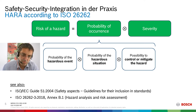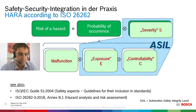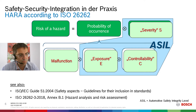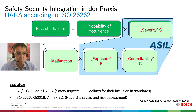The ISO 26262 maps these parameters to different parameters. The risk of a hazard is the combination of the probability of the malfunction and the ASIL. The ASIL is a combination of severity, exposure, and controllability. That's what ISO 26262 does to evaluate the risk of a hazard, and this is done in the hazard analysis and risk assessment.